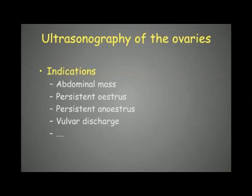We can also look at the ovaries with ultrasonography. It's less common because most female dogs or cats are spayed and have no ovaries anymore, so it's not something we do routinely. But in dogs that are not spayed, we can look for them if we palpate a large abdominal mass, if we suspect an ovarian tumour, if there is a persistent estrous or persistent anestrous, or some vulvar discharge — all signs that there could be a problem with the female reproductive tract.